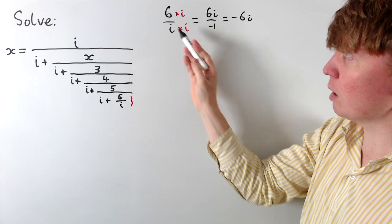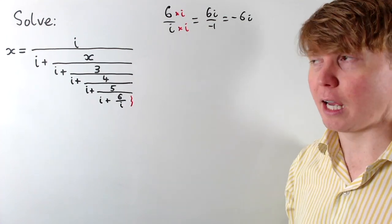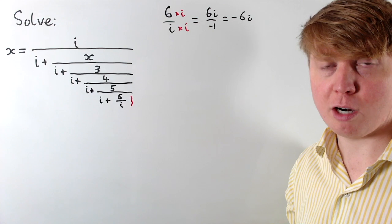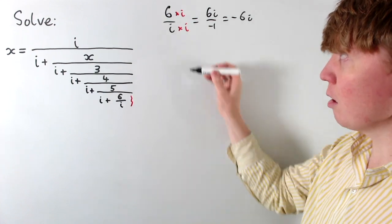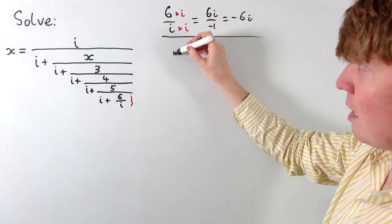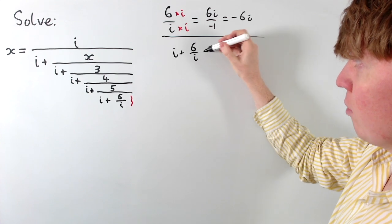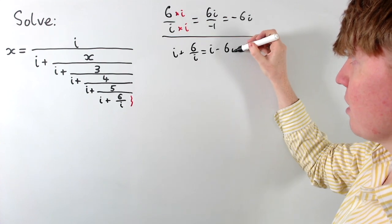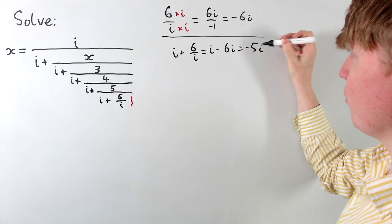So this is saying that whenever we have 1 over i, this is just the negative of i, which will be a really useful result throughout these calculations. So then this allows us to evaluate i plus 6 over i is just i take away 6i, or negative 5i.